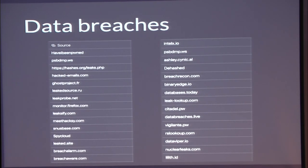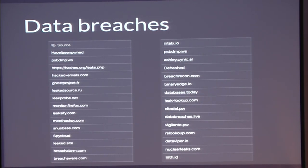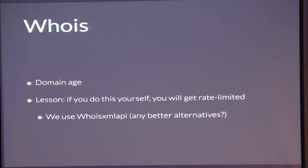Data breaches: there's no shortage of them on the internet. If you want to build this yourself, there are so many sources. We use a few — we love Have I Been Pwned, shout out to Troy Hunt. For WHOIS, we use it to get domain age. The lesson here is that at volume, you will get rate limited or blacklisted. So we use WHOIS XML API for this — they're all right. If anyone has cheaper alternatives, let me know.